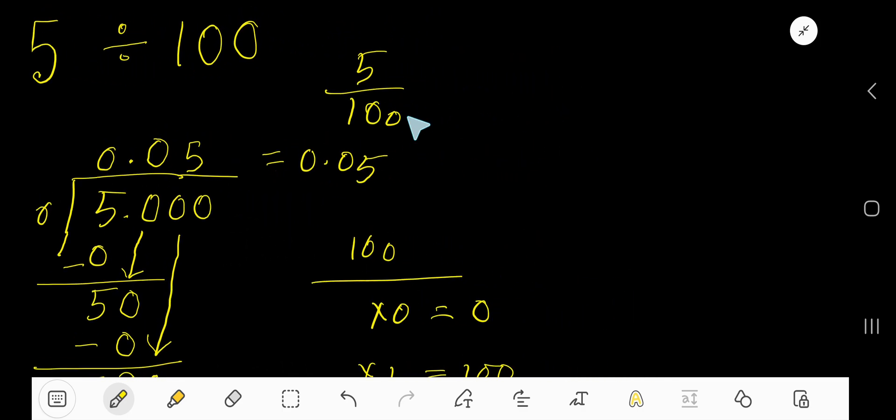Here is the shortcut way. Look. 5 over 100. If you get denominator multiple of 10, like 10, 100, 1000, 10,000. That is, after 1, if you get just 0. Then, you have to write the numerator and then you have to count the number of 0. Here, number of 0 is 2. So, decimal point will move from right side to left side, 2 digits to the left side. That is 1 digit, then 2 digit. If you don't get any digit, then you have to imagine 0. 0.05 is the answer.